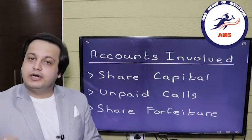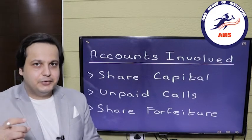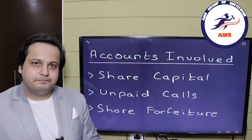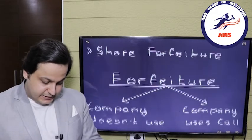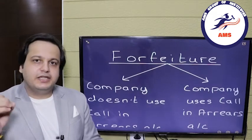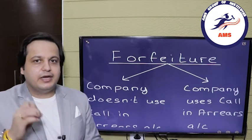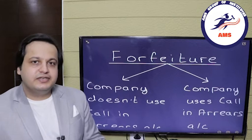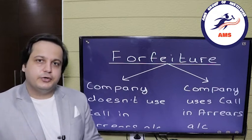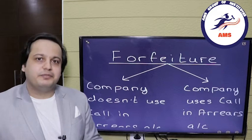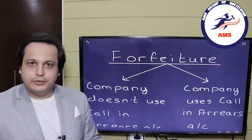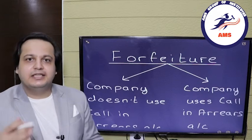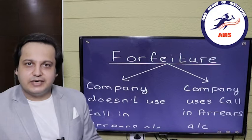The accounts involved in forfeiture are the share capital account, the unpaid calls account, and the share forfeiture account. As we have already seen, there are two methods — when the company is not using the call in arrears account, and when it is. We discussed the first method in the previous video. For those who missed it, please go to the channel and check it out. Today we discuss the second method using the call in arrears account.